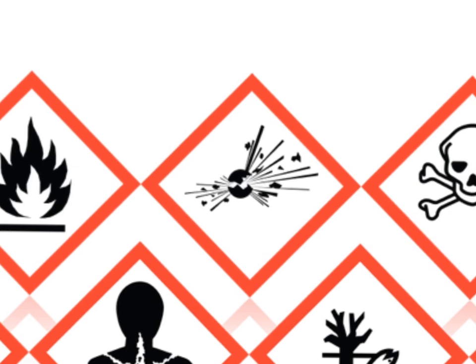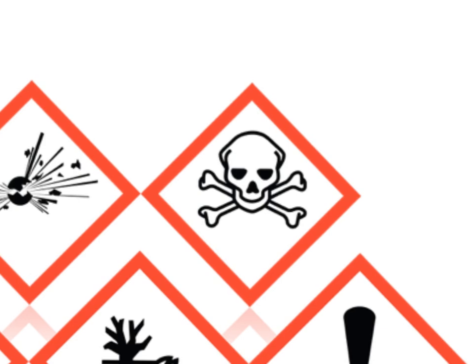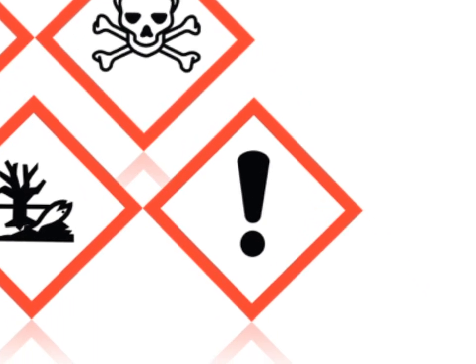The next depiction is of a skull and crossbones. This represents materials that are acutely toxic, which means that they are toxic or fatal if swallowed. The next one is an exclamation mark. This will appear on chemicals that are skin, eye, or respiratory irritants.